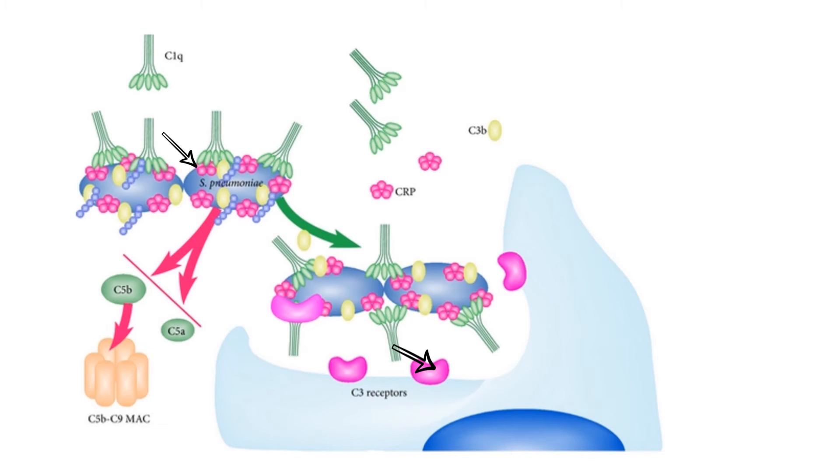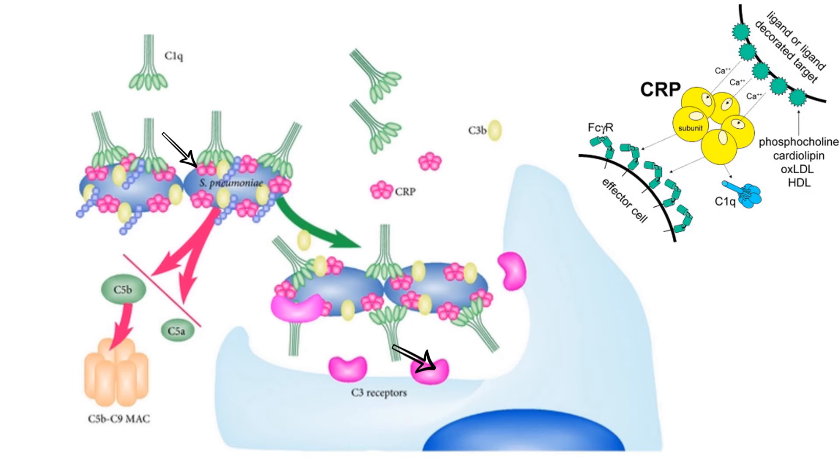There is also evidence that CRP opsonizes cells by binding to FC-gamma receptors on effector cells, but this is yet to be conclusively determined.